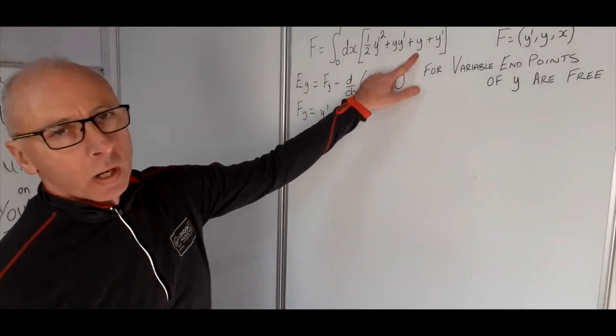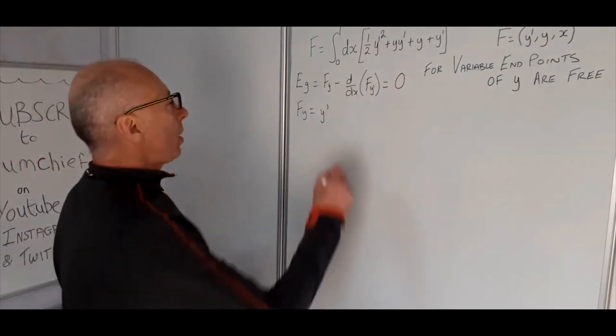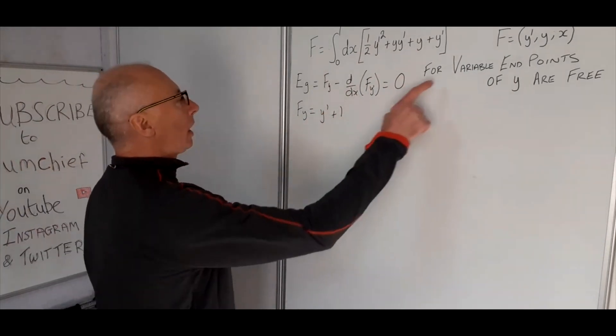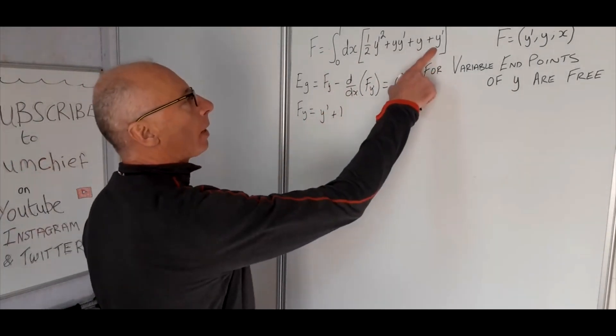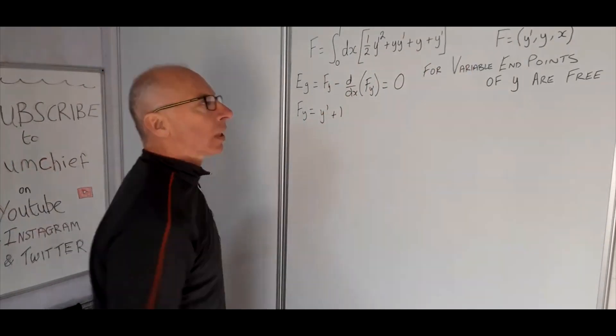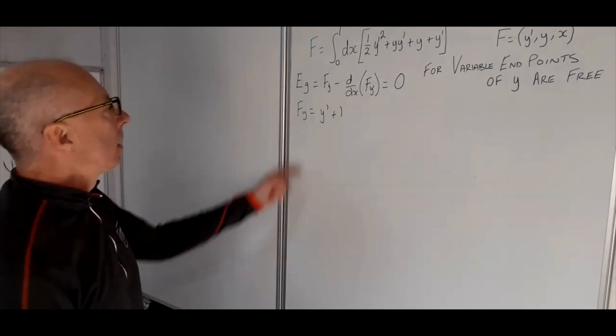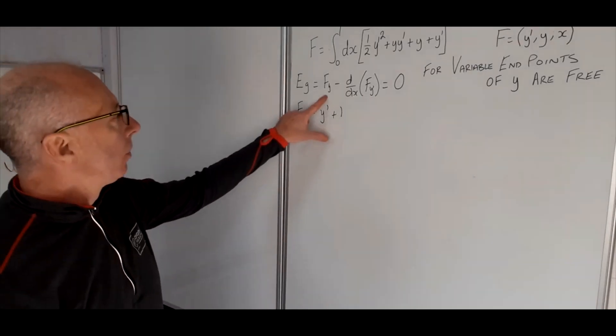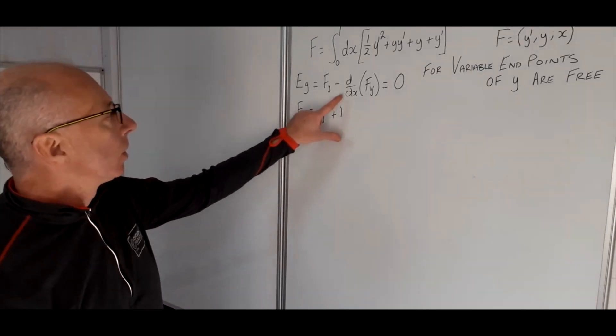Taking the partial with regards to y, we end up with a 1, and the y prime here we can disregard. So that's our first part of the Euler-Lagrange equation.